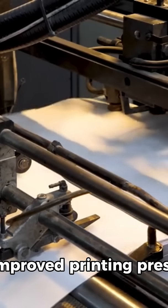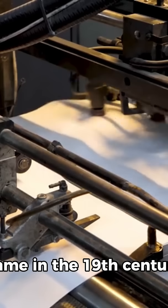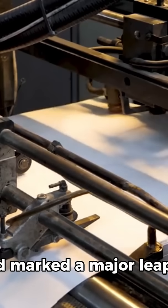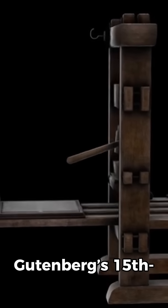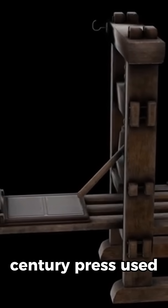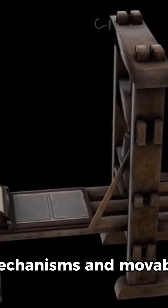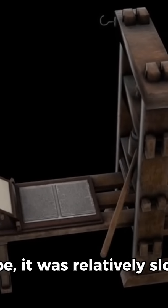The invention of the improved printing press came in the 19th century and marked a major leap in printing technology. While Johannes Gutenberg's 15th century press used hand-operated wooden mechanisms and movable type, it was relatively slow.